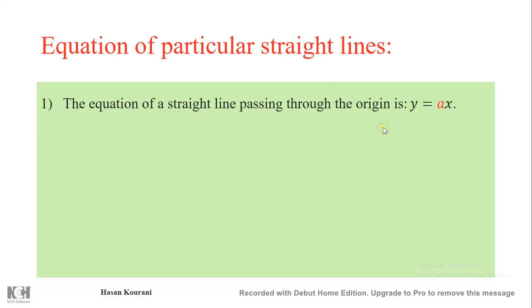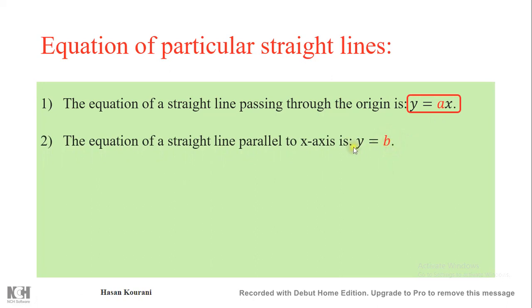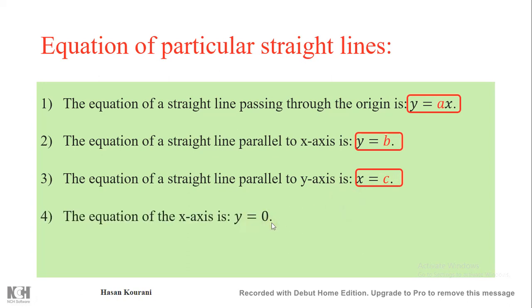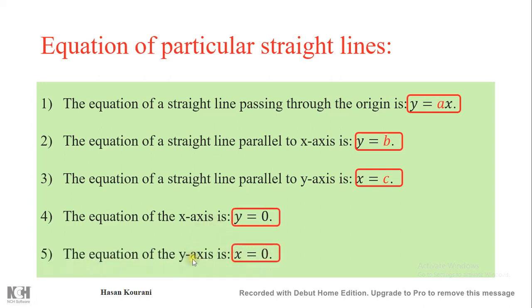Particular straight line equations: a line through the origin has equation y = ax; a line parallel to the x-axis has equation y = constant (horizontal); a line parallel to the y-axis has equation x = constant (vertical). The x-axis itself has equation y = 0, and the y-axis has equation x = 0.